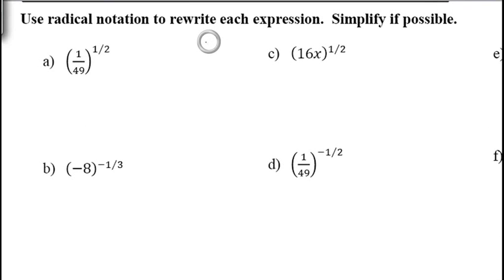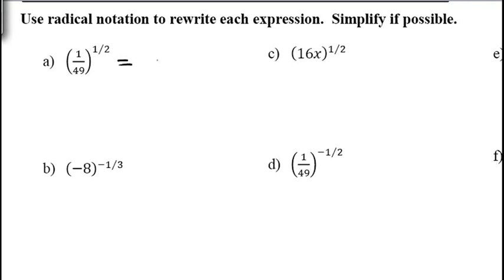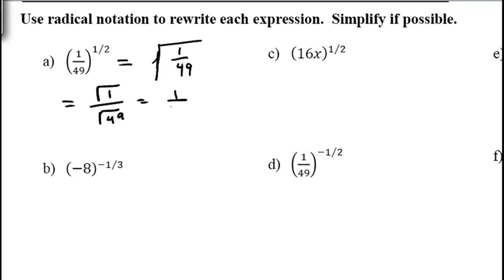We want to rewrite each expression with radical notation and simplify. For 1/49 raised to the 1/2: the exponent is 1 and the root is 2, so we take the square root of 1/49. That's the square root of the numerator over the square root of the denominator — square root of 1 is 1, square root of 49 is 7, so this simplifies to 1/7.